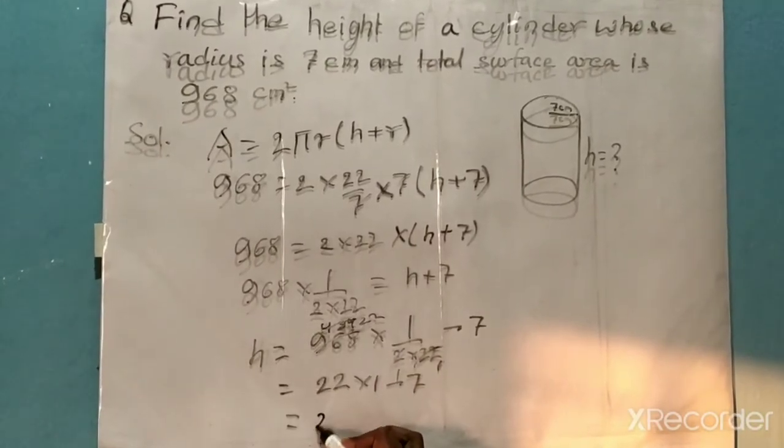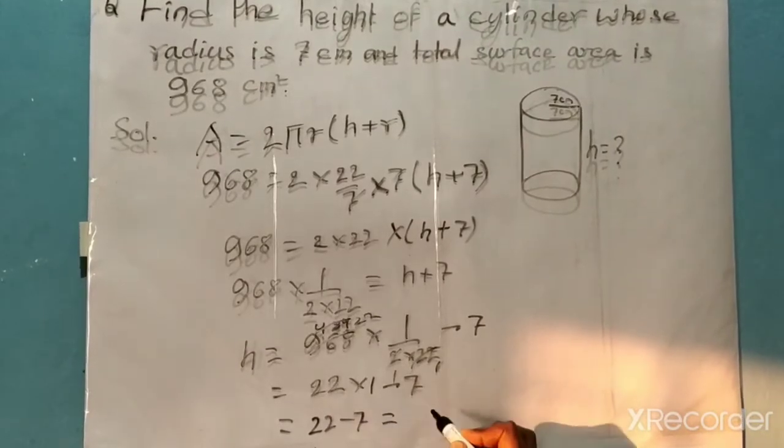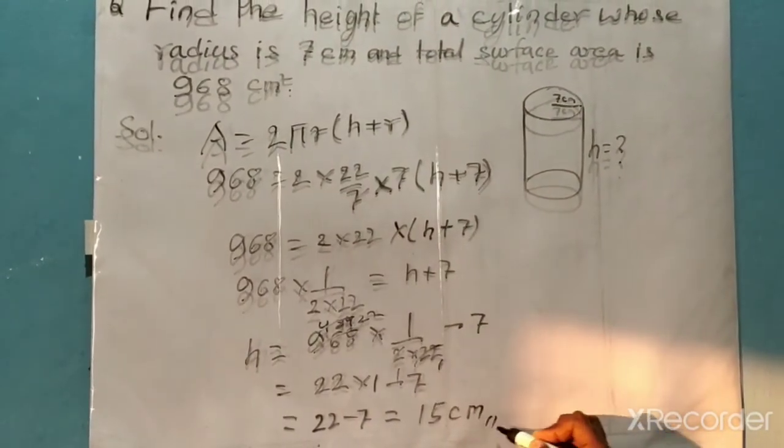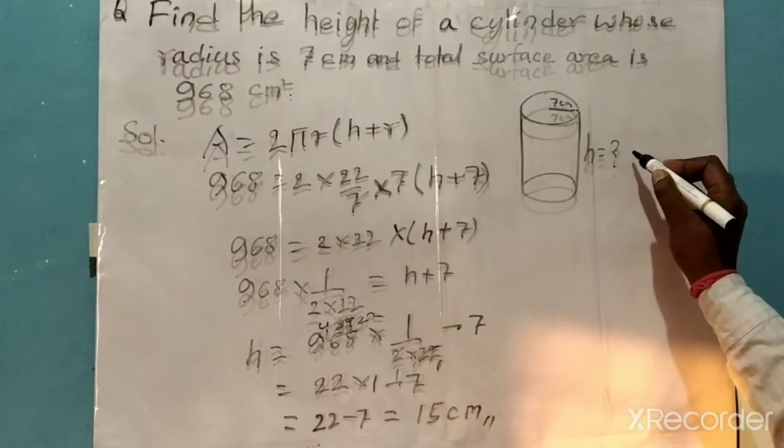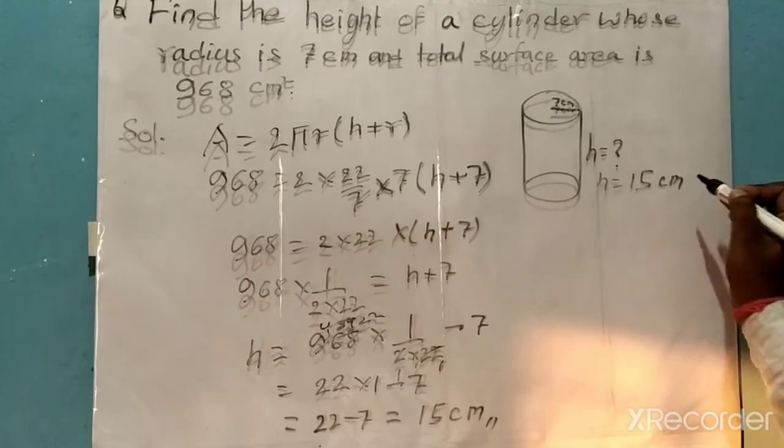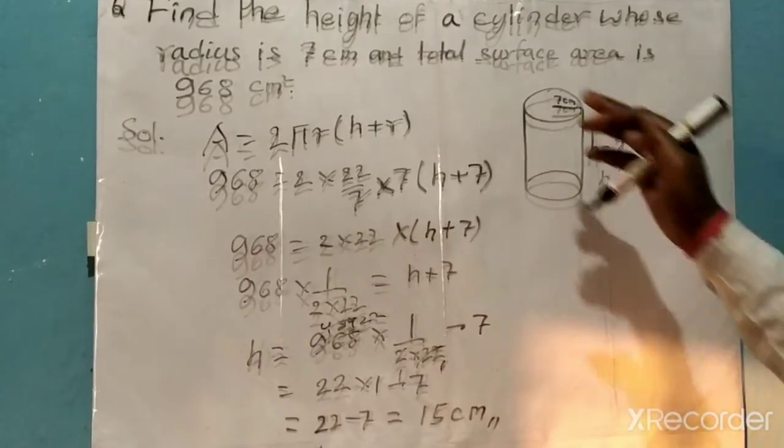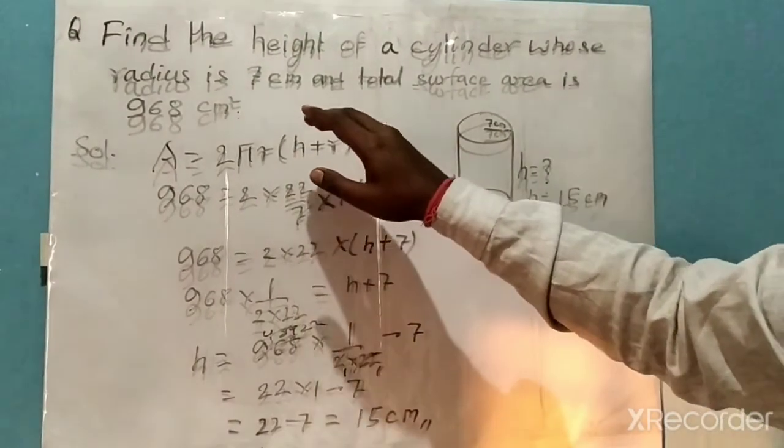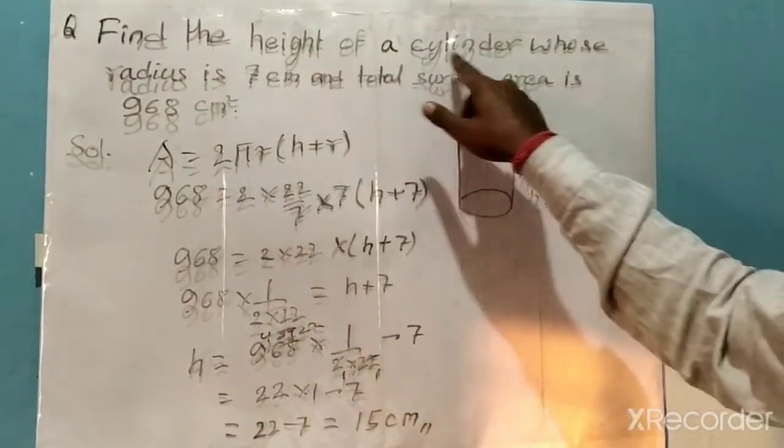So 22 - 7 equals 15 centimeters. Therefore, the height is 15 centimeters: h = 15 cm. This is the answer for this question.